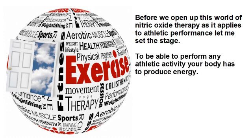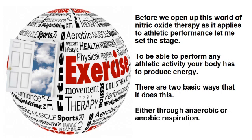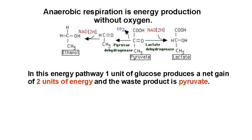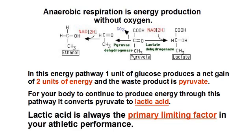To be able to perform any athletic activity, your body has to produce energy. There are two basic ways that it does this: either through anaerobic or aerobic respiration. Anaerobic respiration is energy production without oxygen. In this energy pathway, one unit of glucose produces a net gain of two units of energy, and the waste product is pyruvate. For your body to continue to produce energy through this pathway, it converts pyruvate to lactic acid. Lactic acid is always the primary limiting factor in your athletic performance.